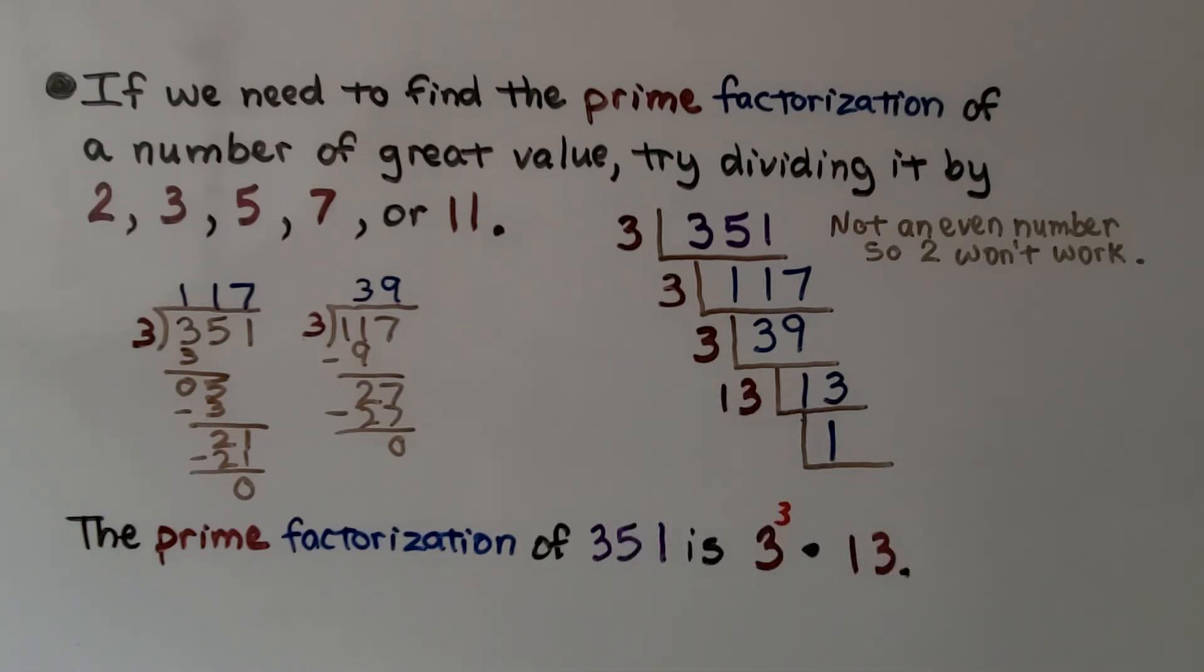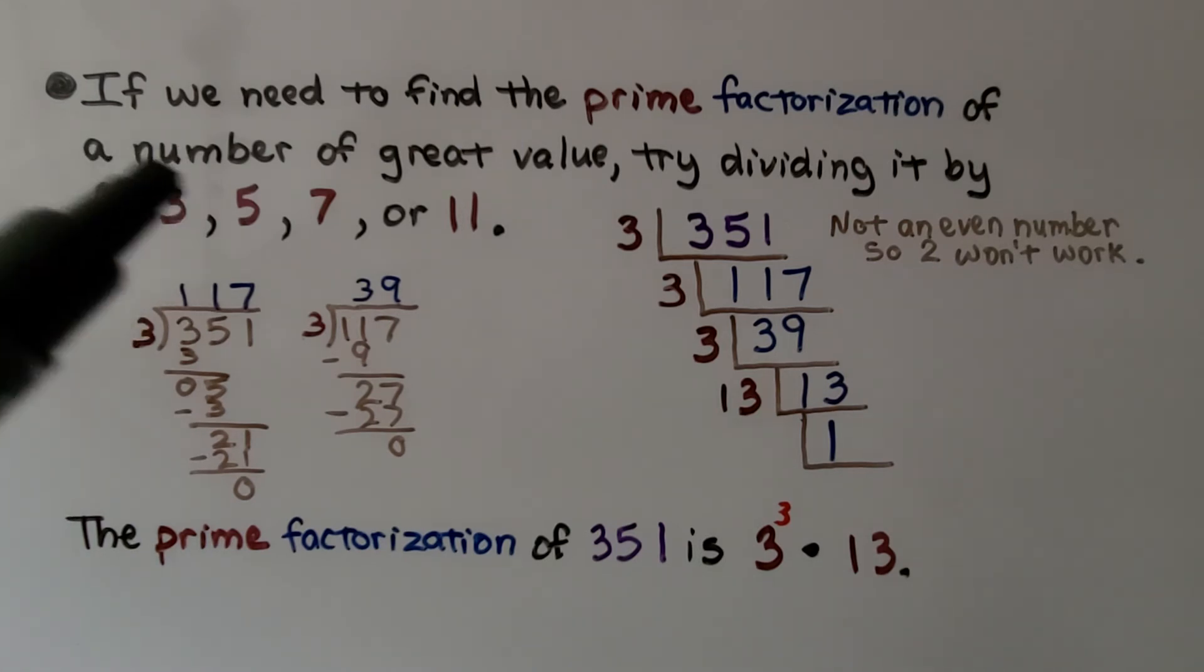So if you have some number of great value that's in the thousands or 700s, 800s, 900s, try dividing it by 2, 3, 5, 7, 11, 13 even, 17 even. But try these first.